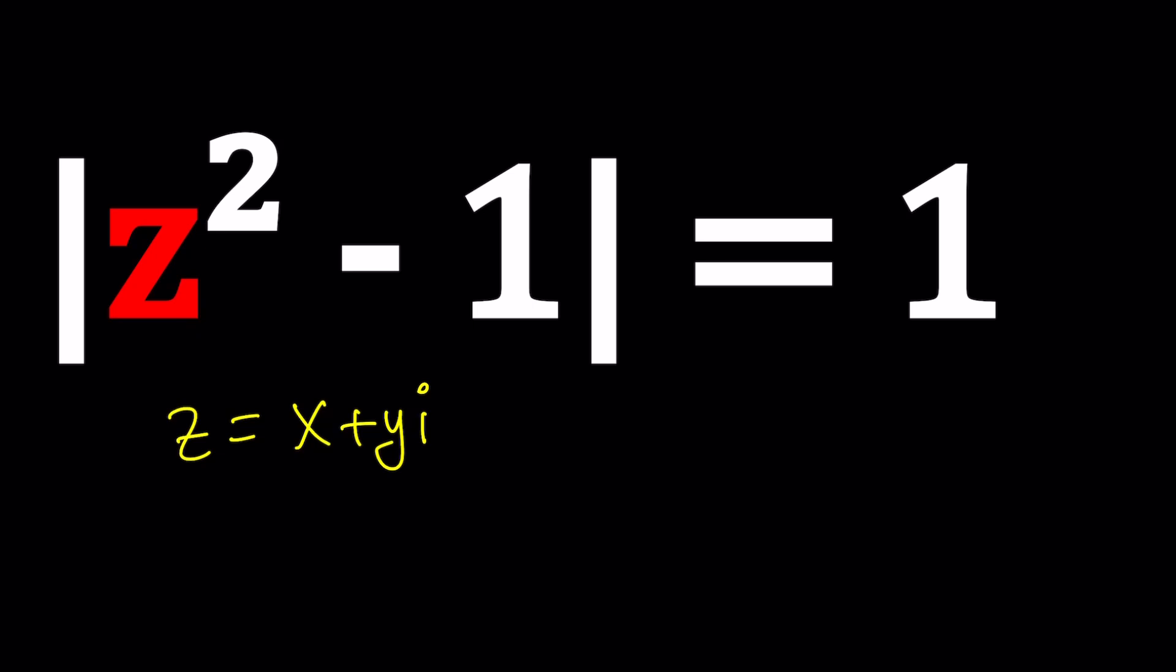That's why we use x and y replace z with that, you're going to get x plus yi squared. And then we're going to subtract one from it and then take the absolute value and we want this to be one. Great.